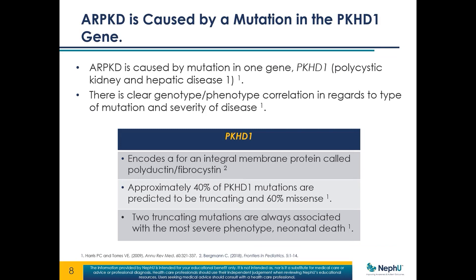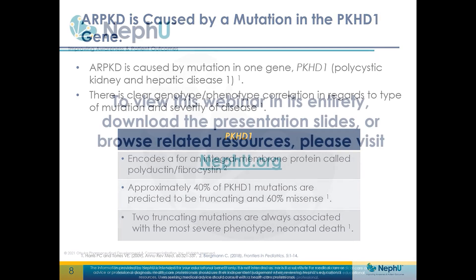About 40% of PKHD1 mutations are predicted to be truncating and 60% are missense. The missense mutations are associated with less severe disease. If you happen to get two truncating mutations, that will always cause a severe phenotype and neonatal death.